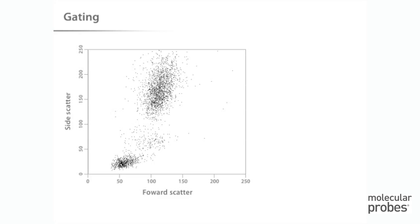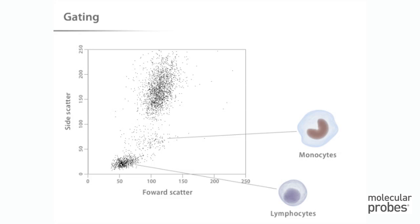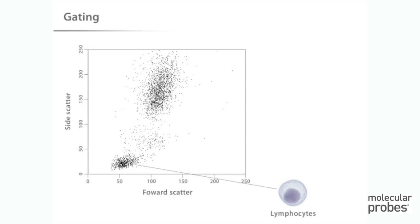Now let's look at data analysis. As we saw in Tutorial 1, it is possible to identify various populations within a cell sample based on their position in the forward versus side scatter dot plot. Remember that each dot on the dot plot represents a cell, and each cell has associated with it all of the scatter and fluorescence data collected at the time it passed through the laser. We can direct the analysis software to consider only the lymphocytes by drawing a region around this population. This is called gating.